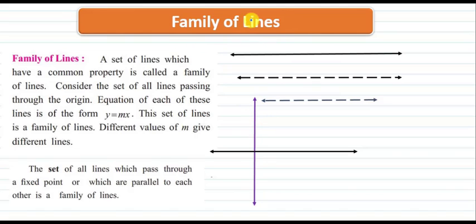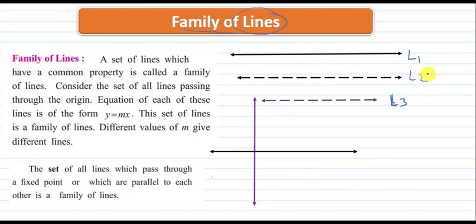As the name suggests, there will be multiple lines which will make a family of lines. For example, here you can observe this is line 1, this is line 2 and this is line 3. As line 1, line 2 and line 3 are possessing some common property — that is they are parallel — such a collection or set of lines which follow some common properties are called a family of lines.